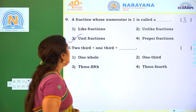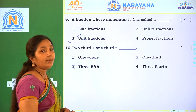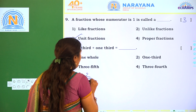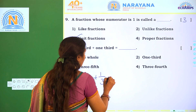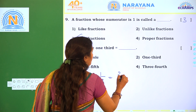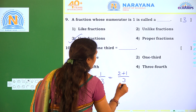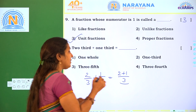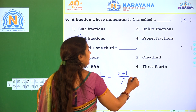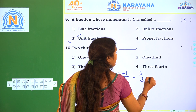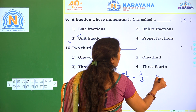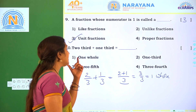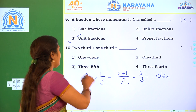Next one. 2 third plus 1 third equals dash. 2 third means 2 by 3 plus 1 third, so 2 plus 1 by 3. The common denominator is 3, so we add the numerators: 2 plus 1 is 3. 3 by 3 is nothing but 1 — one whole part. The correct option is Option 1.